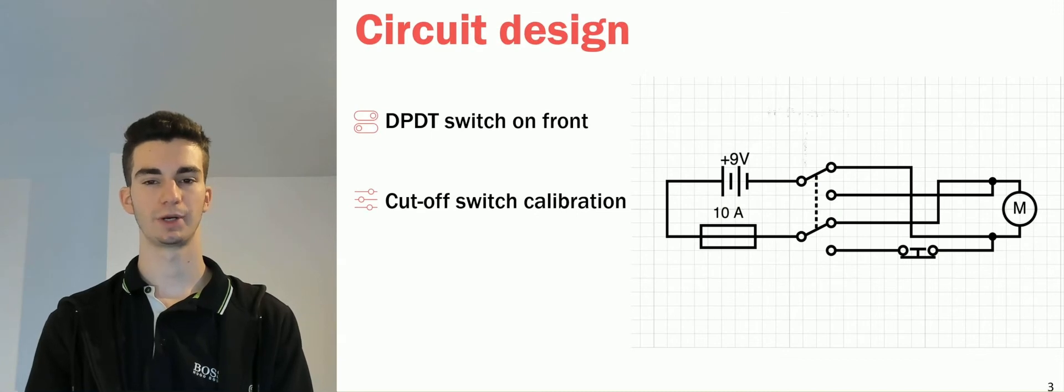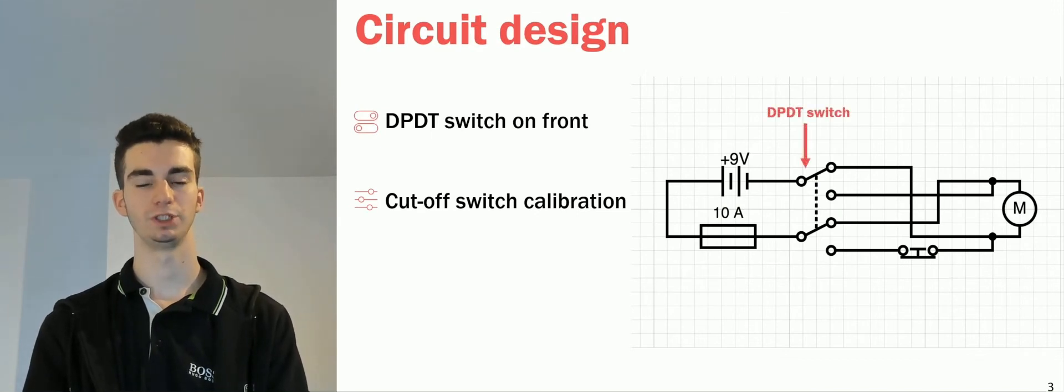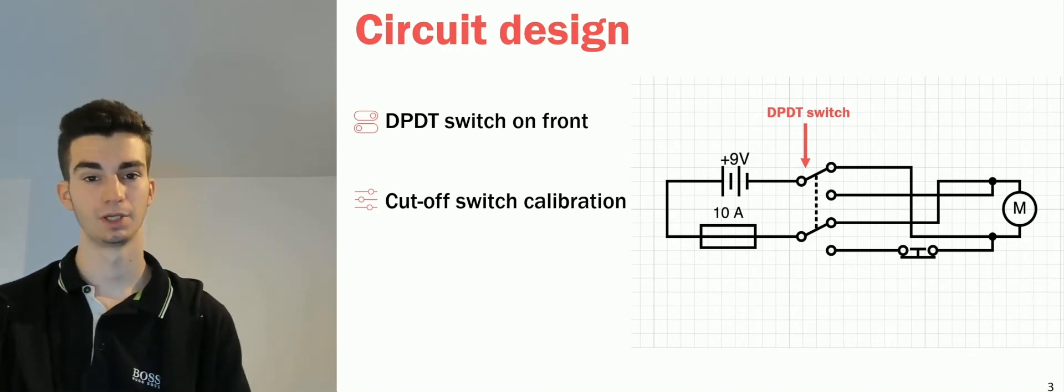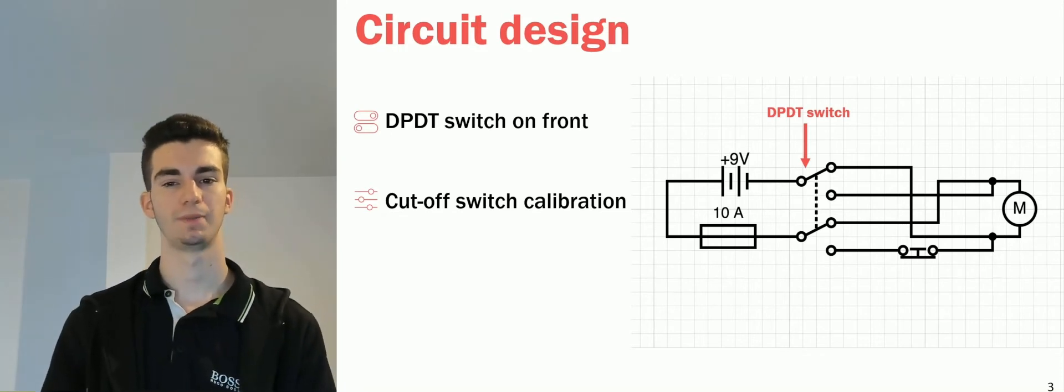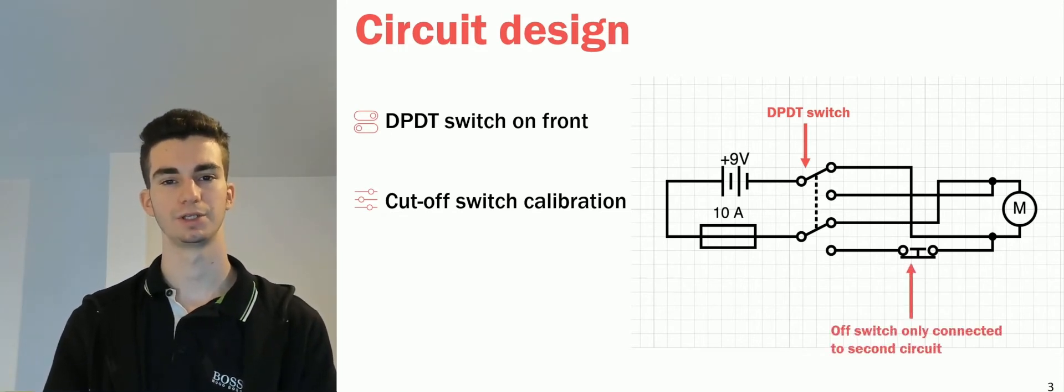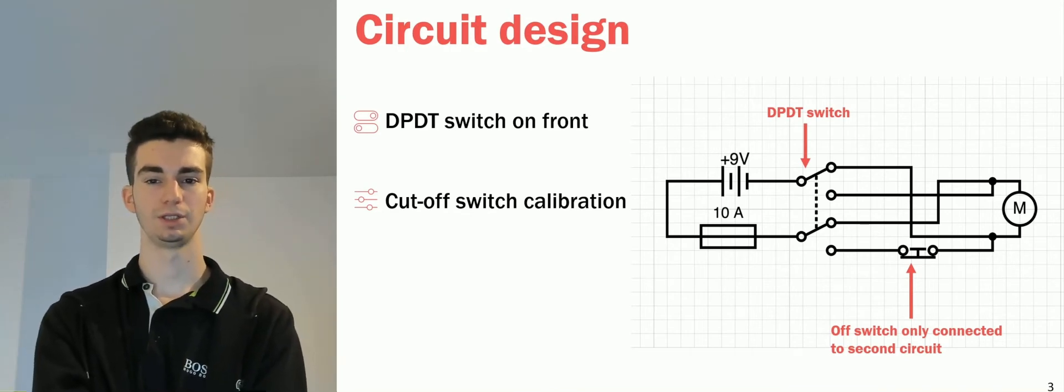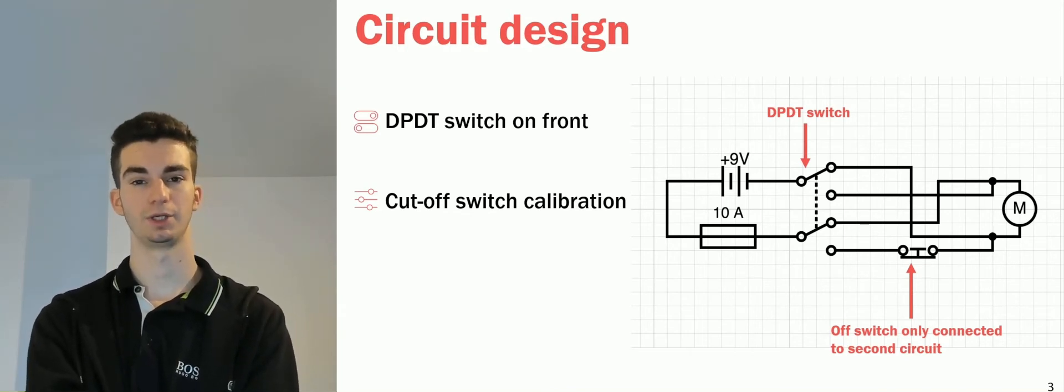The vehicle changes direction at the wall by using the impact to move a DPDT switch. This changes the circuit that is connected to the power supply which reverses the polarity of the motor, moving the car in the other direction. The off switch that cuts the power at the end of the run is only connected to the second circuit, allowing the car to start with the switch in the off position. This means that no offsets are required to make it function properly.